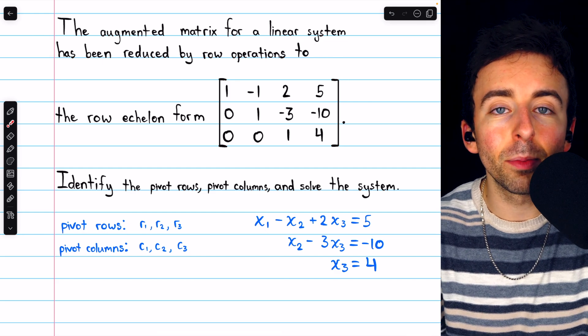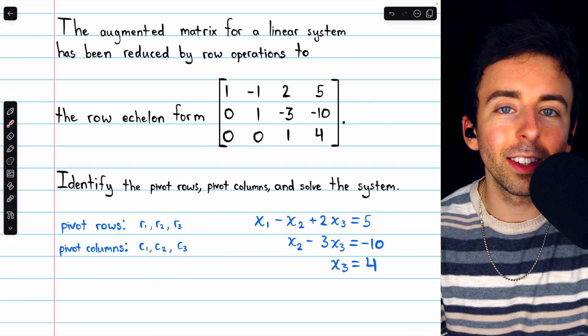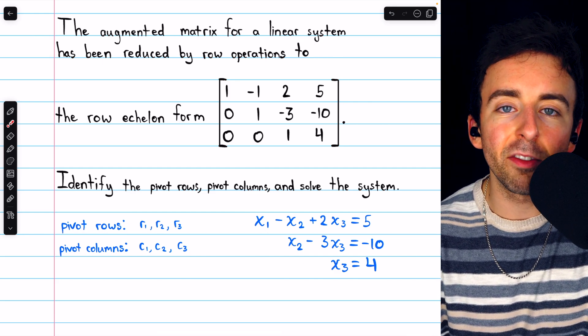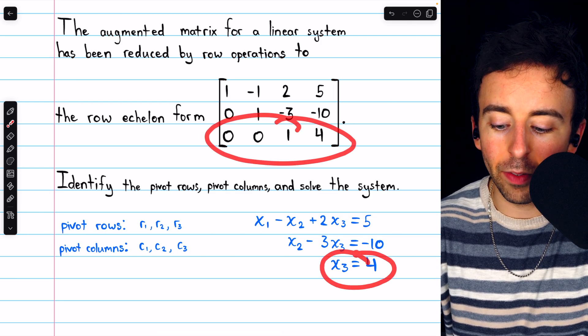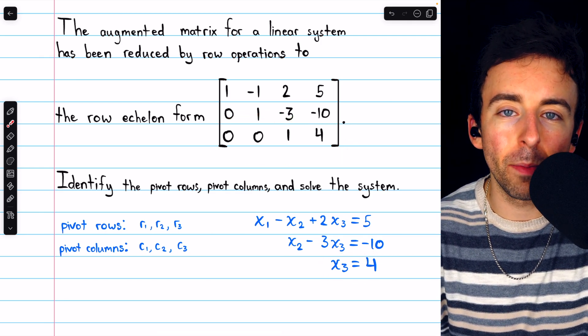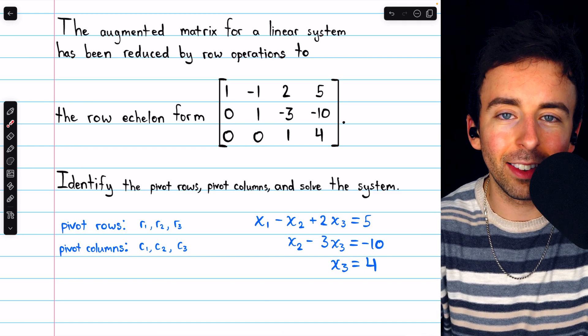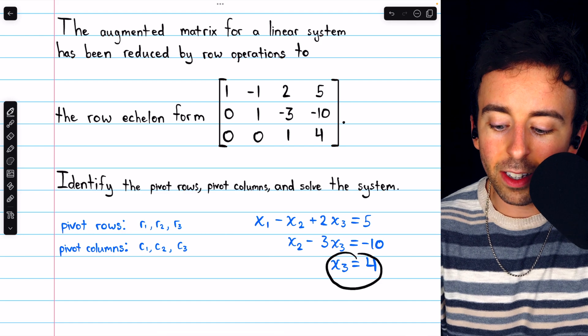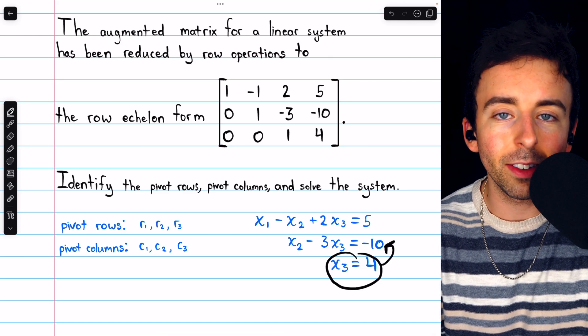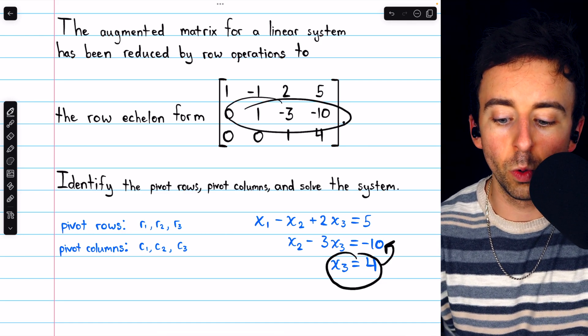When a matrix is in row echelon form, we use what's called back substitution to finish solving the system. That's because we kind of proceed backwards. The last row is going to give us the immediate information about one variable. In this case x3 is equal to 4.